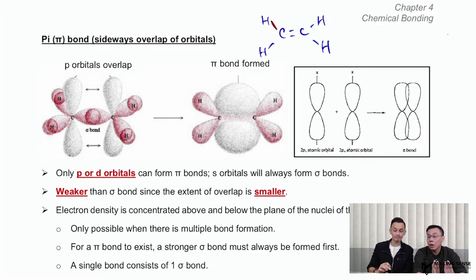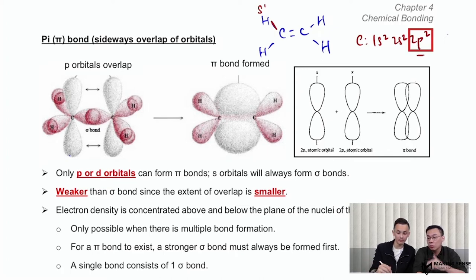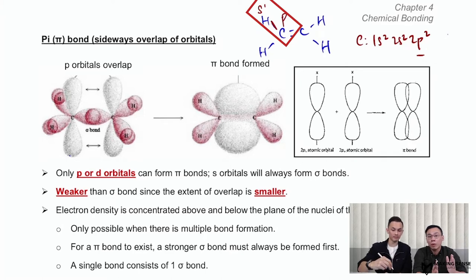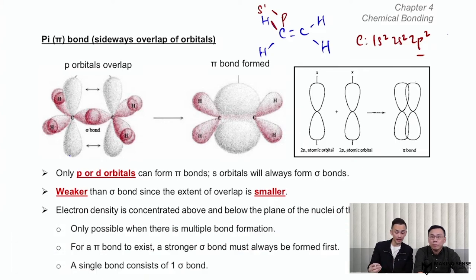To determine the orbitals involved in forming the bond, you have to write the electronic configuration of the atoms involved. For hydrogen, it has only one valence electron — so it would be 1s1. Carbon has six electrons, so it would be 1s2, 2s2, and 2p2. Focus on the outermost orbital — it's the 2p orbital. So it's the 2p orbital of carbon overlapping with the s orbital of hydrogen — what we call an sp orbital overlap, the sp sigma overlap between carbon and H.